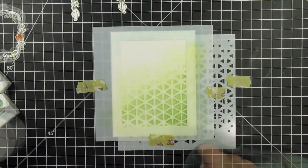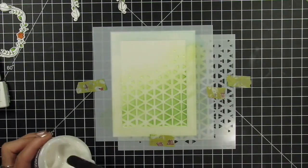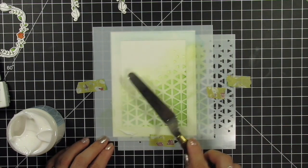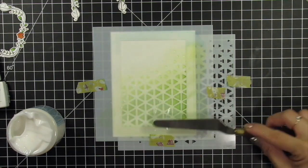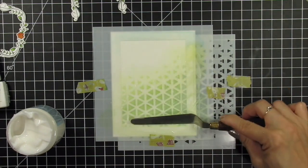I gently wipe the top of the stencil so the texture paste won't pick up the ink on top of the stencils. This is transparent matte texture paste, so the ink color will show through the paste. It will just add a tiny bit of shine and of course a cool texture when dry.